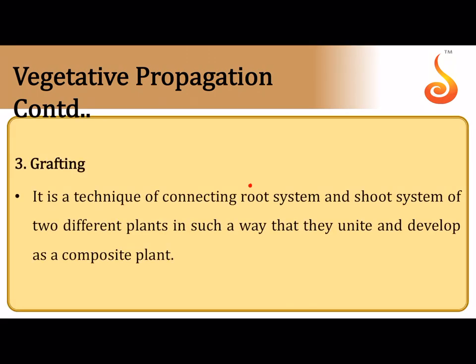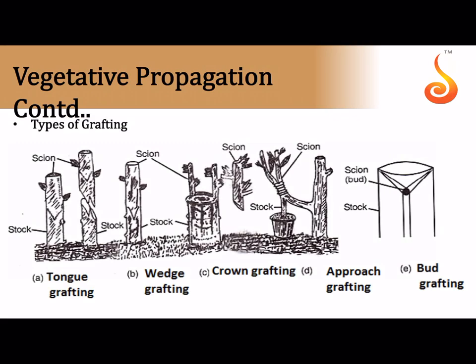In grafting, the root system of one plant is connected to the shoot system of another. The root-contributing part is called the rootstock and the shoot-contributing part is called the scion. In tongue grafting, oblique cuts are made in both and tied together. The fruit produced always belongs to the scion, as the scion forms the stem, floral primordium, flowers, and fruit — the rootstock only contributes the root system.